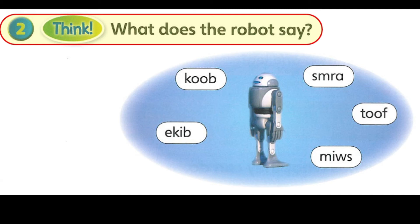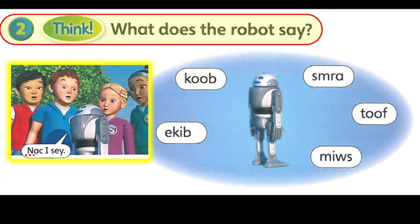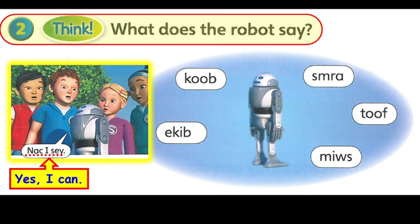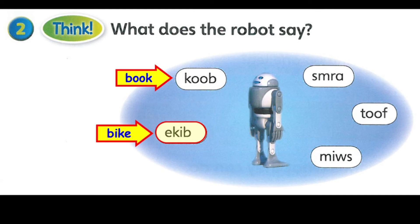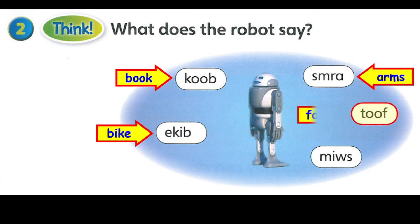What does the robot say? Yes, I can. Book. Bike. Arms. Foot. Swim.